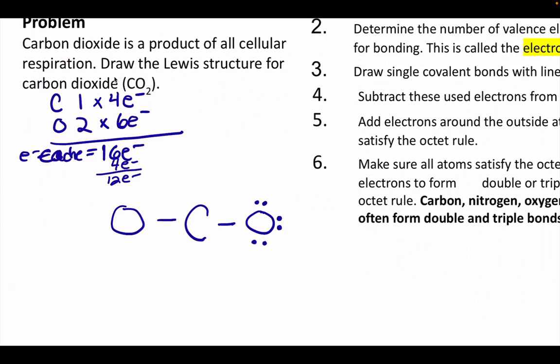You're going to place the electrons on the outside atoms first. So 2, 4, 6. I'm not going to put any more because now that oxygen has 8. So 2, 4, 6, 8, 10, 12.